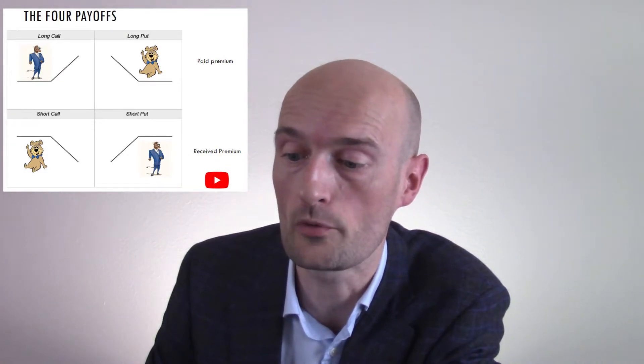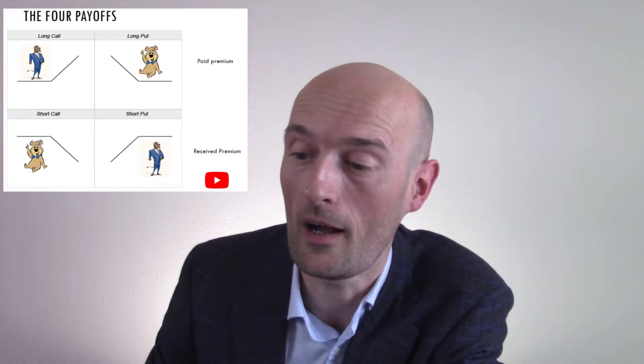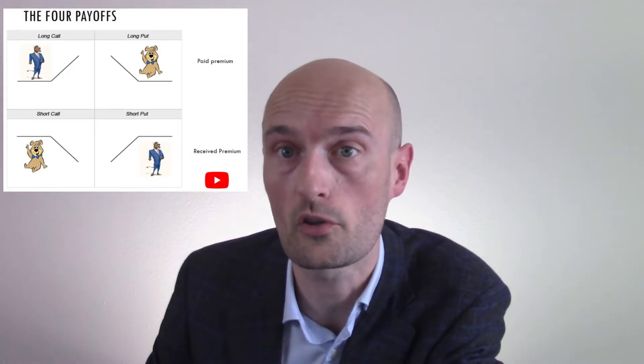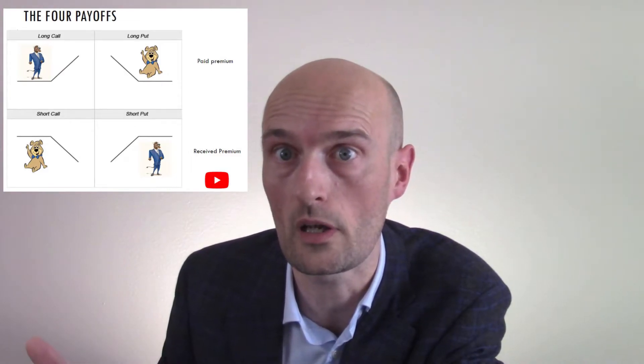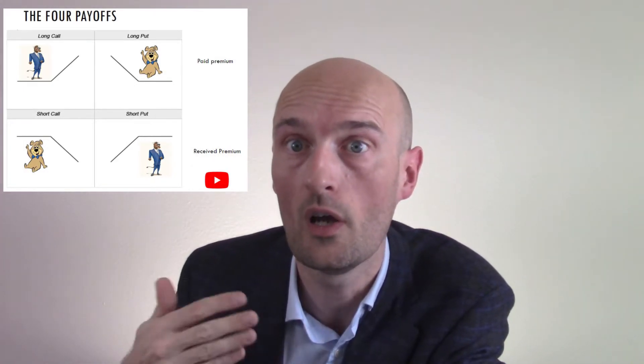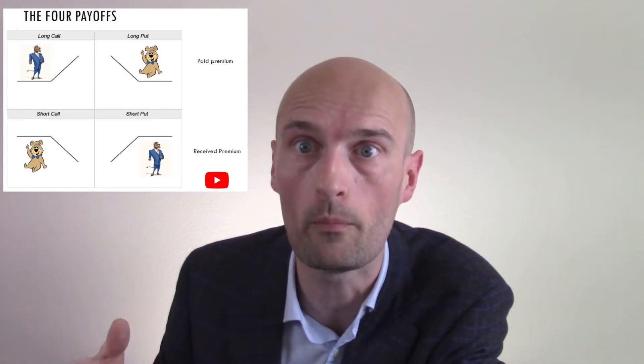There are two basic types of options: call options and put options. I'll put a graphic on screen now showing call options and put options — the bull indicates a bullish position and the bear indicates a bearish position. Essentially we can either buy or sell a call option or a put option, giving us four basic positions: long a call, long a put, short a call, or short a put. Whenever you are long one of the options you have the right but not the obligation, and whenever you've sold one you receive a premium and take on the obligation.